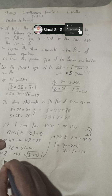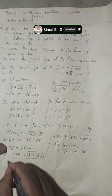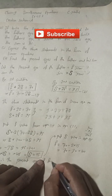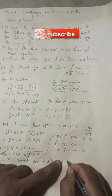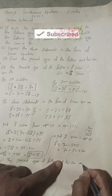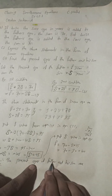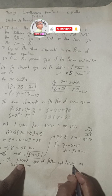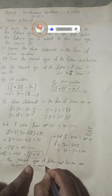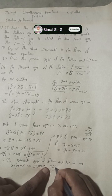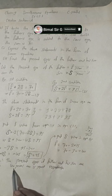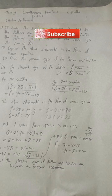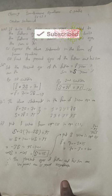Therefore, the present ages of the father and his son are 40 years and 15 years respectively. The first value (40 years) is for the father and the second (15 years) is for the son. This is the required solution for part two.